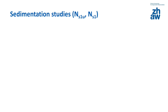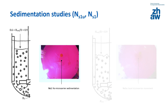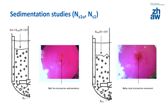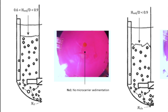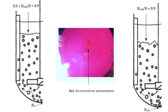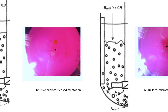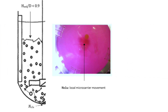Two suspension criteria were found to be especially important when successfully expanding HMSCs in stirred bioreactors operating with microcarriers: the NS1 and the NS1U criteria. NS1 represents the impeller speed at which no particle stays at the bottom of a bioreactor for longer than one second. NS1U is the lower limit of NS1 and occurs when particles are located at the bottom of the vessel with none of them at rest.